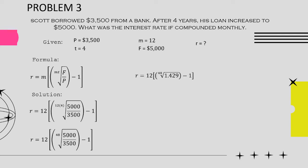So R equals 12 multiplied by the 48th root of 1.429 minus 1. Computing it, the answer is 0.09. Since we are talking about rate, we need to multiply by 100 to get the percentage: 0.09 times 100 equals 9%.